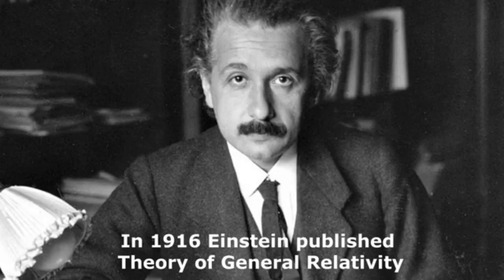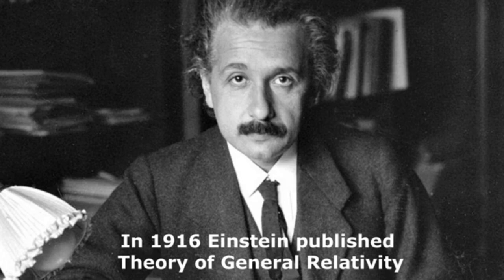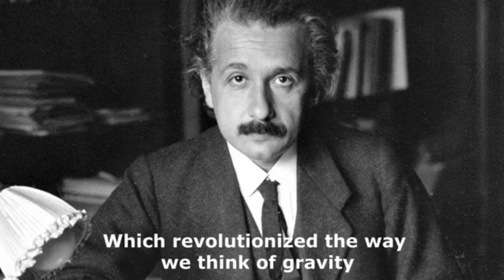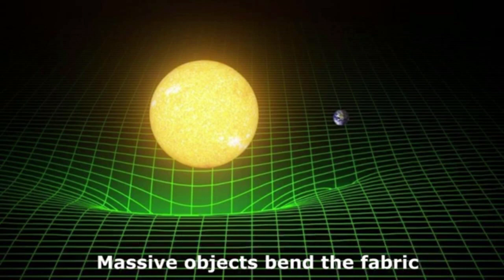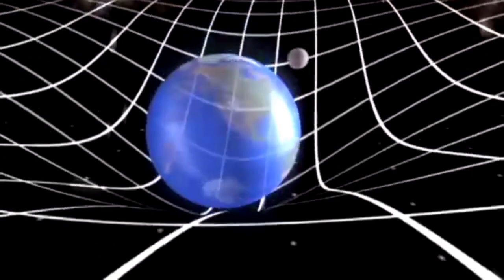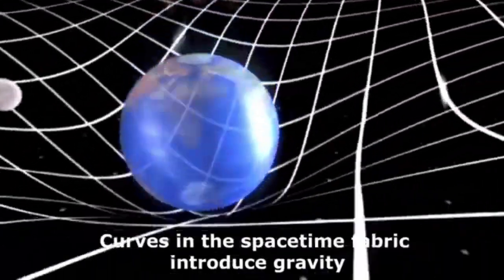In 1916, Einstein published theory of general relativity, which revolutionized the way we think of gravity. To explain gravity, Einstein imagined space as a stretchy fabric. Massive objects bend the fabric. Curves in the space-time fabric introduce gravity.